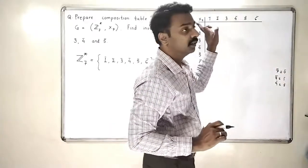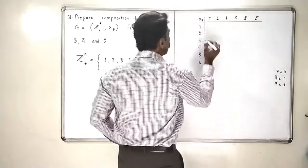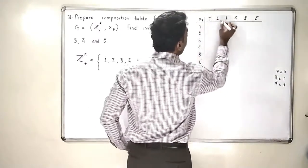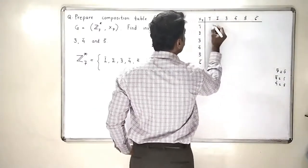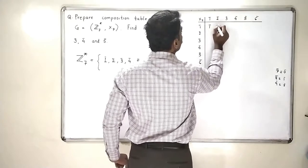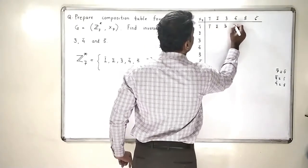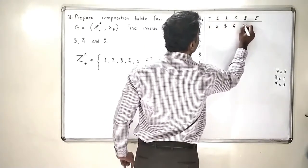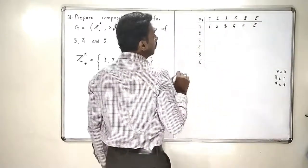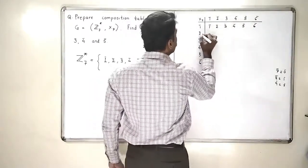Let me show you the first line. 1-bar multiplied by all these elements gives you the same element back, so the first row is: 1-bar, 2-bar, 3-bar, 4-bar, 5-bar, 6-bar.